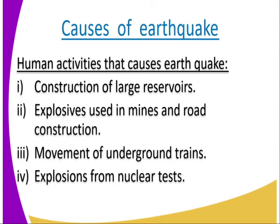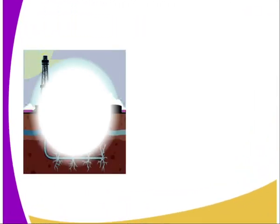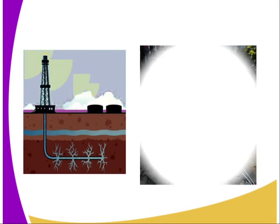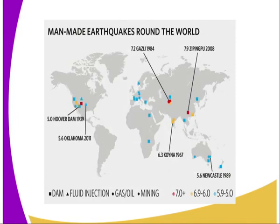Number three is movement of underground trains, which results in shaking of the crust. Number four is explosions from nuclear tests, which also cause earthquakes. As you can see in the diagram, we have large reservoirs and mining activities. We also have the main areas showing the distribution of earthquakes — you can see where earthquakes are distributed across those areas.